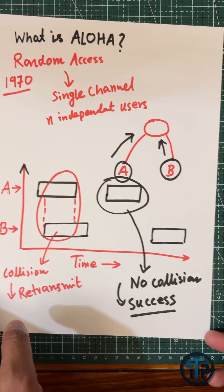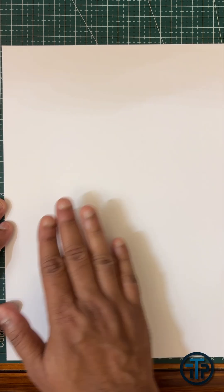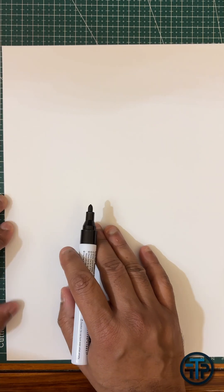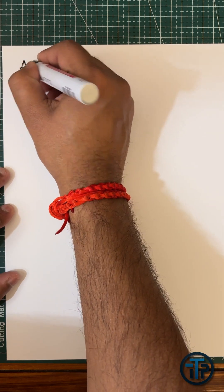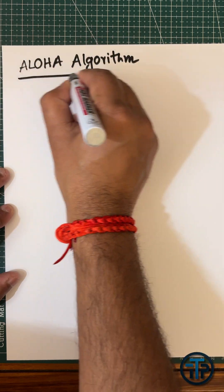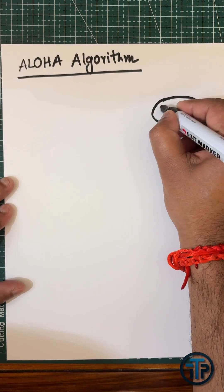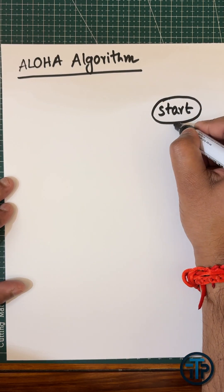So that is the concept of packet collision. Now, as we know, if there is packet collision, you have to retransmit. For ALOHA, let us discuss the algorithm. First, we'll start with any user - that is the start.